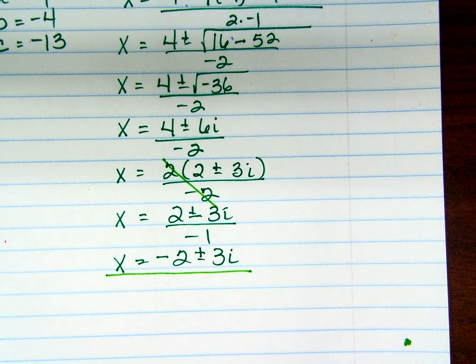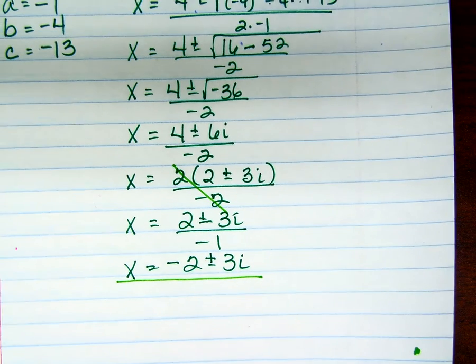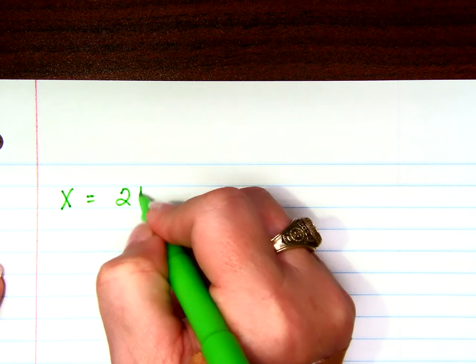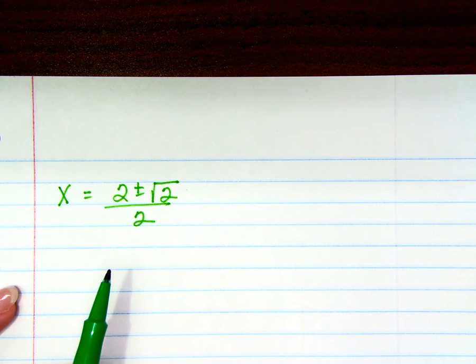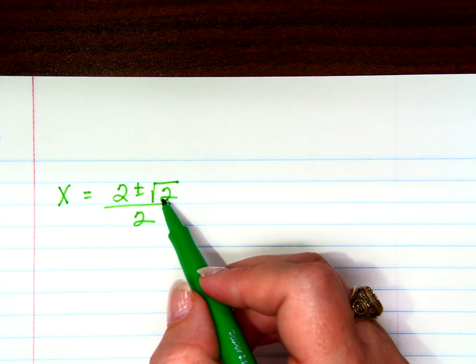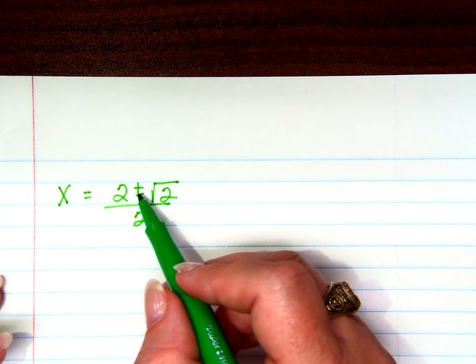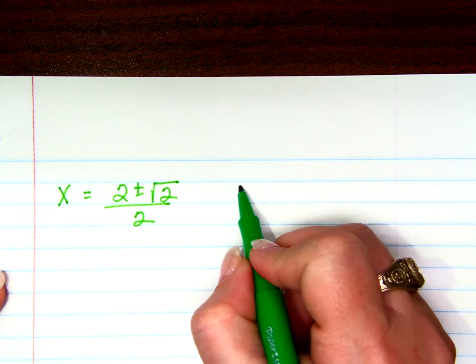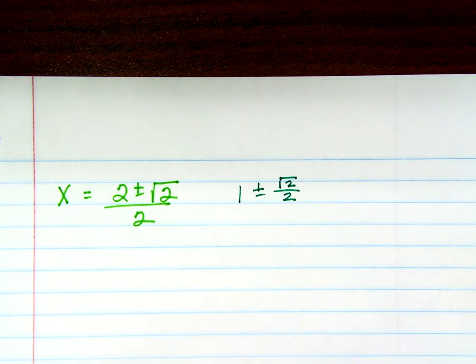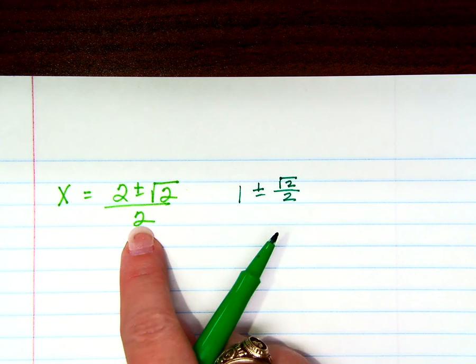Those are the three examples, but I want to show you a couple more answer forms. Let's say you get x equals 2 plus or minus the square root of 2, all over 2. Can you cross out all those 2's? You can only simplify them if they are factors. If things are being added or subtracted, you can't simplify them — and you especially can't get inside of a radical.